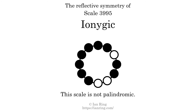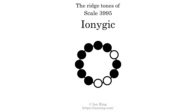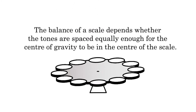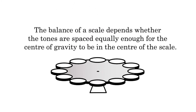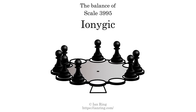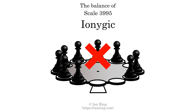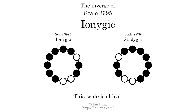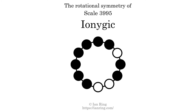This scale has no reflective symmetry. This scale has a different pattern of intervals ascending and descending, so it is not palindromic. This scale has no ridge tones. The balance of a scale depends on whether the tones are spaced equally enough for the center of gravity to be in the center of the scale. This scale is not balanced. The inverse of a scale is a mirror image — it is what you get when the sequence of intervals is reversed. The inverse of this scale is scale 2879, also known as Strategric. This scale is chiral; it cannot transform into its inverse by rotational transformation. This scale has no rotational symmetry.